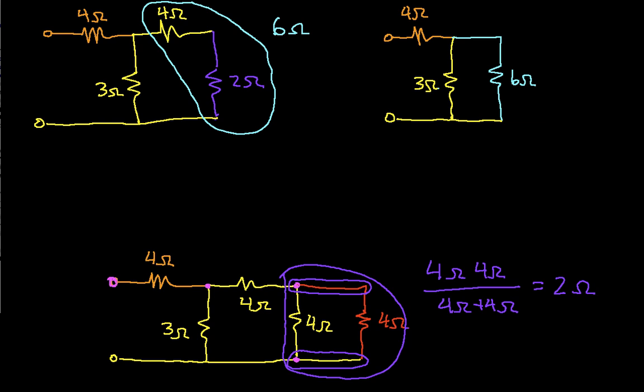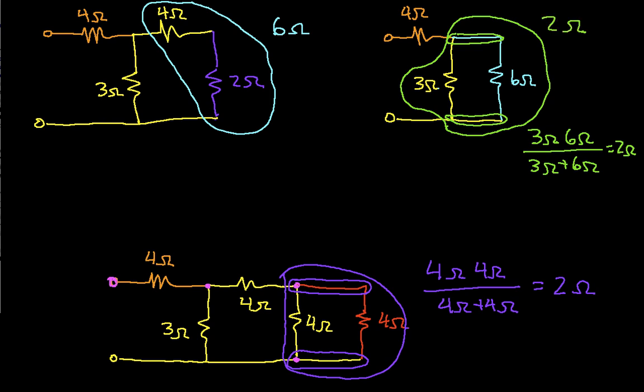Again, I look at my circuit. And I discover now that I have a 3 ohm resistor in parallel with the 6 ohm resistor. Again, they're in parallel because they're connected between the same two nodes. So 3 ohms in parallel with 6 ohms will give me 3 times 6 over 3 plus 6, which turns out to be 2 ohms. So this parallel combination is 2 ohms.